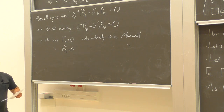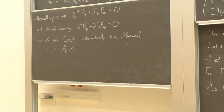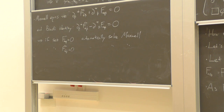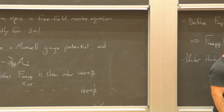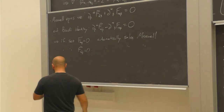Similarly, if you set F-tilde_{alphadot betadot} equal to zero, purely self-dual or purely anti-self-dual abelian gauge fields automatically solve Maxwell's equations. You can show that both F_{alpha beta} and F-tilde_{alphadot betadot} are conformal densities of weight minus one, and then repeat the earlier calculation to see that Maxwell's equations are conformally covariant.